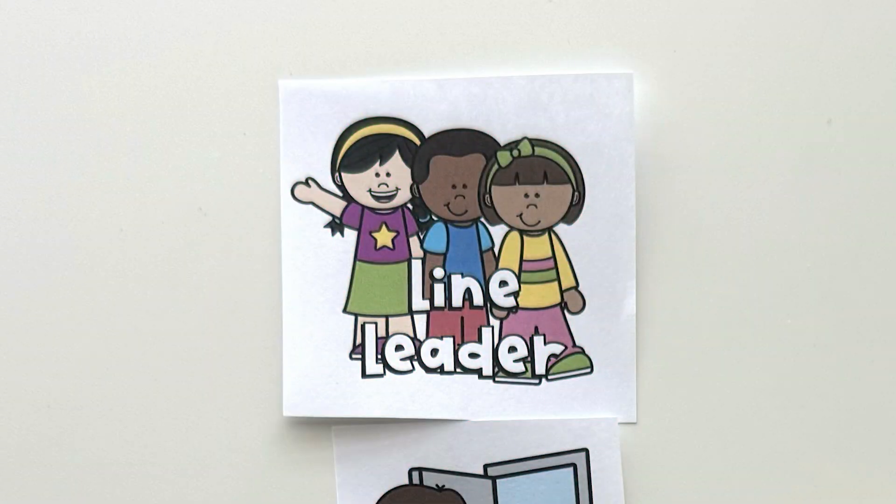Tip number two is that some of these placeholders are actually also student jobs. By using student jobs in addition to numbers, none of my students have ever argued over who's first or where, because they all get a turn to be first, second, last, and right before last. The rest of the kids are just in the middle.